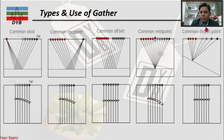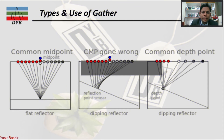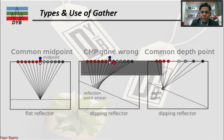Lastly we have the common depth point. Common midpoint and common depth point are different terms. In the case of dipping reflectors we use the common depth point. For a flat reflector, the midpoint is exactly at the middle — the blue point. But for a dipping reflector, the CMP is not actually at that blue point. In that case, all traces assigned to the depth point is called the CDP gather.